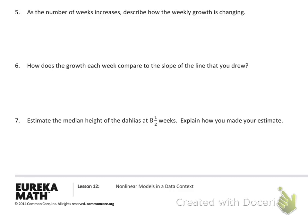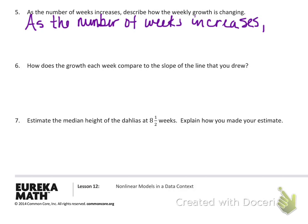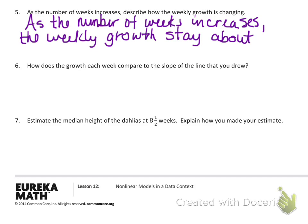For number five, one way to phrase it would be: as the number of weeks increases, the weekly growth stays about the same. Each week that plant is growing about 3.4 to 3.5 inches.